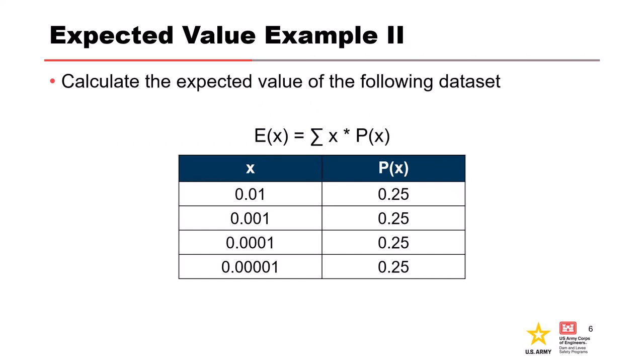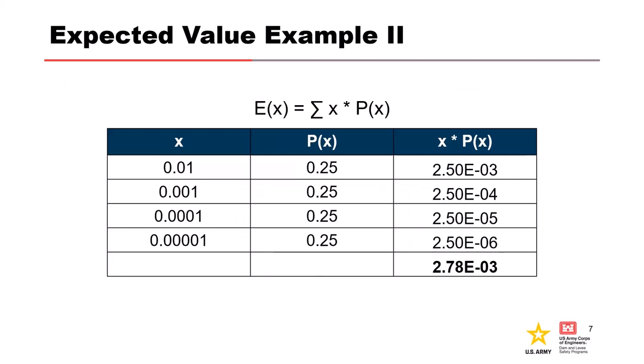Now let's try a second example with the following data set. So it's actually 2.78E-3. The two really important things to pay attention to is that this is just an average, a straight average of the x values. The reason that it is, is because the probability of each of these values occurring is equal. So since the probability is equal, you can actually just take a normal average of the x column.